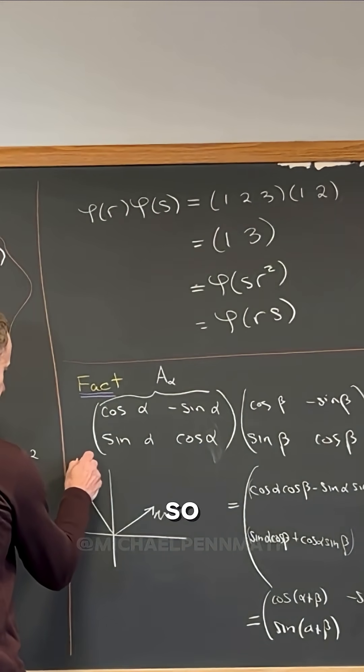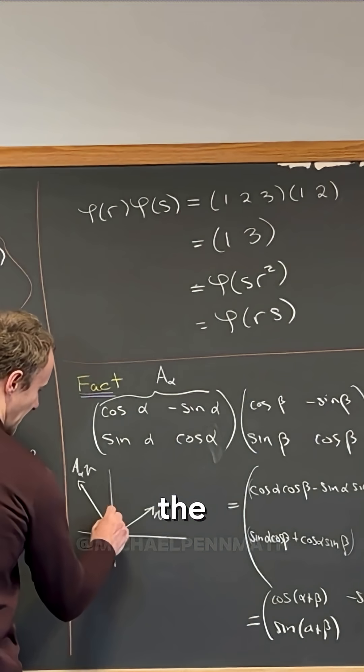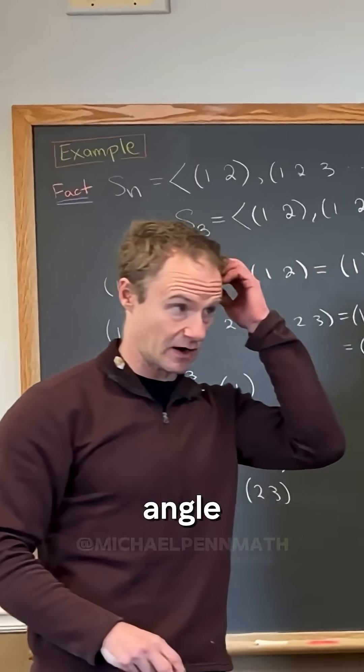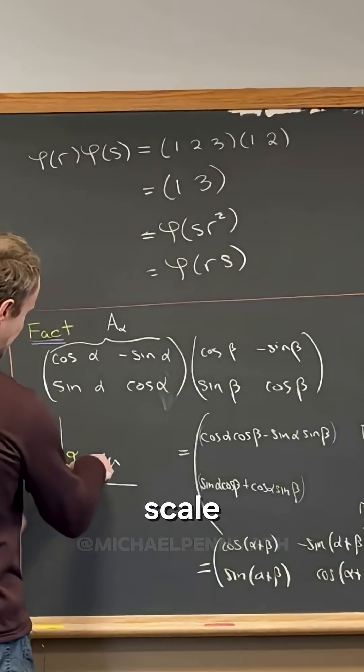looks like this. So A_alpha v, where the angle here is just alpha, it's a rotation matrix. It rotates by angle alpha, and then they should have the same length, like this should have the same scale.